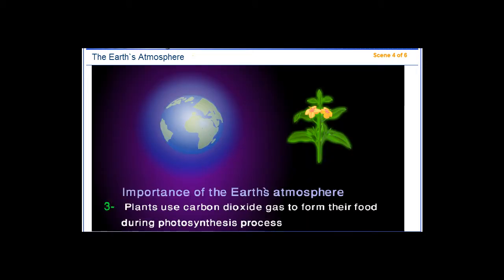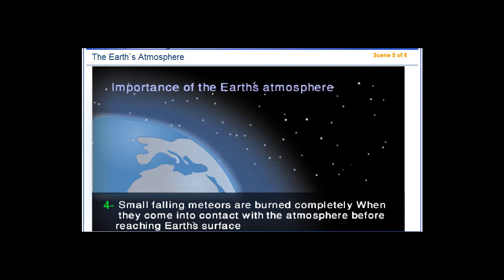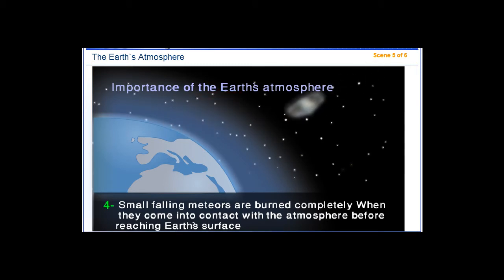3. Plants use carbon dioxide gas to form their food during the photosynthesis process. 4. Small falling meteors are burned completely when they come into contact with the atmosphere before reaching the Earth's surface.